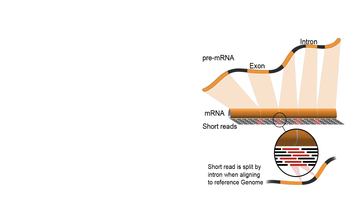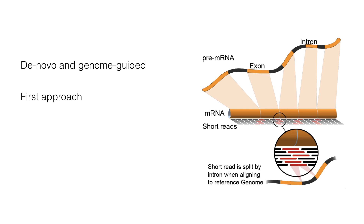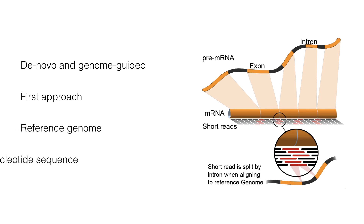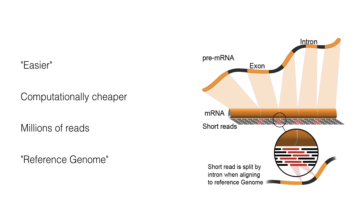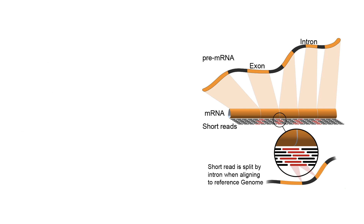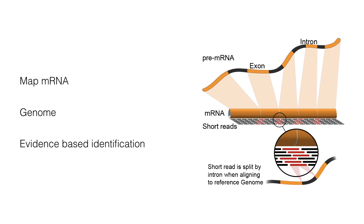RNA sequence comes in short reads, so it also needs to be assembled. Two different assembly methods are used for producing a transcriptome from raw sequence reads: de novo and genome-guided. The de novo approach does not rely on the presence of a reference genome to reconstruct the nucleotide sequence. An easier and relatively computationally cheaper approach is aligning millions of reads to a reference genome, which can also be used to map mRNA transcripts to a genome — in other words, to perform evidence-based gene identification.